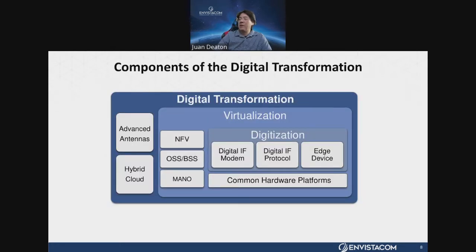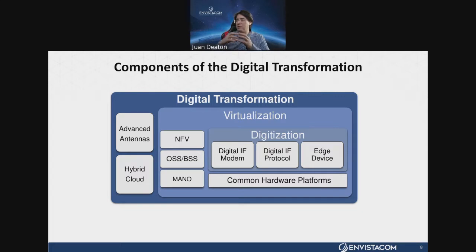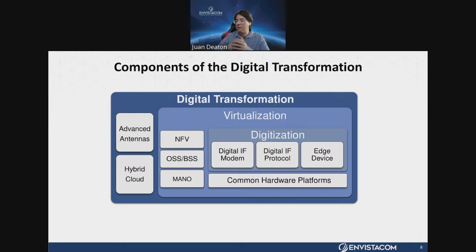Let's talk briefly about the components of the digital transformation. This figure shows the dependencies of the digital transformation — if you're within a box, that means it's a dependency. For digitization to be fulfilled, its dependencies are a digital IF modem, a digital IF protocol, and an edge device. For virtualization to be complete, everything in digitization has to be complete as well. We'll touch on digitization and virtualization in the introduction, then dive deeper in subsequent sections.